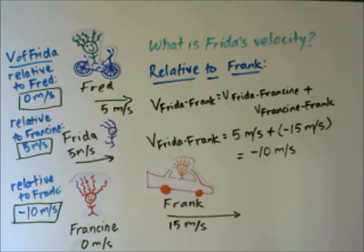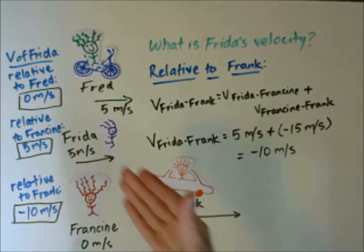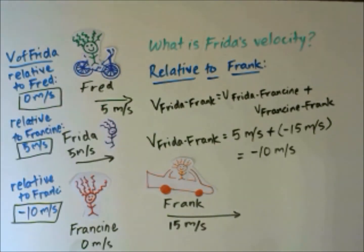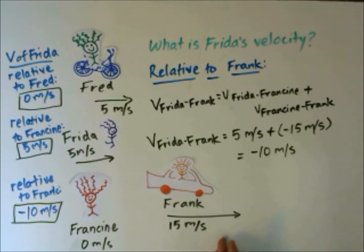We now have three answers for the velocity of Frida. Which one is correct? Well, all of them are, depending on your frame of reference. If you use Fred as your frame of reference, the runner is not traveling at all. If you use Francine as your stationary frame of reference, Frida is traveling at 5 meters per second. If you use Frank, who's traveling in a car, relative to him Frida is actually heading in the negative direction.